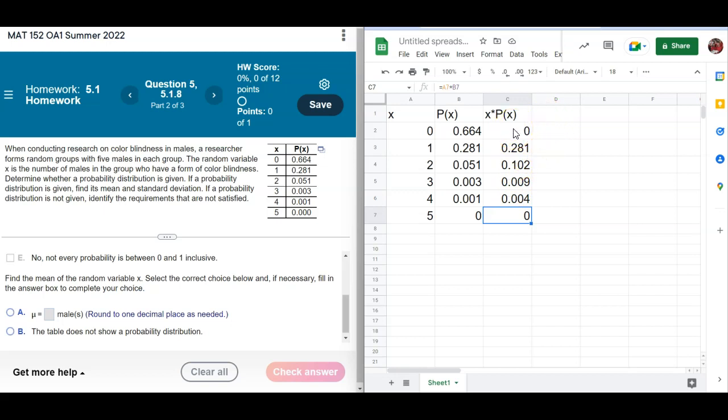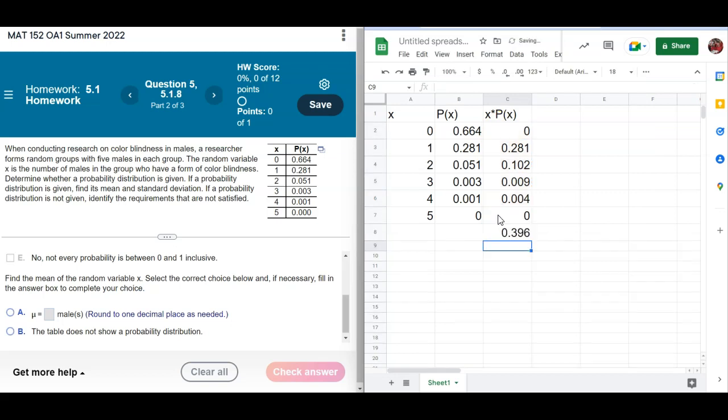Now once we multiply those together, we add these up. I'm just going to write it down here this time. Sum of all that stuff. It's suggesting I do that. So there's my sum. Now I'm going to see how many one decimal place. So 0.396. So that's going to be 0.4.